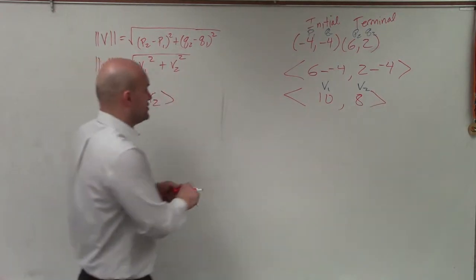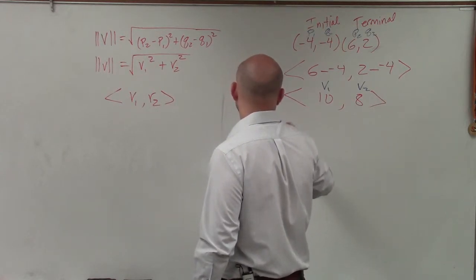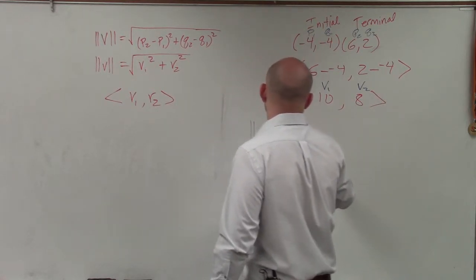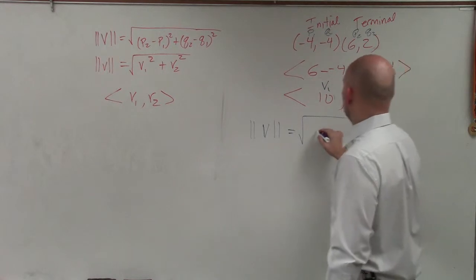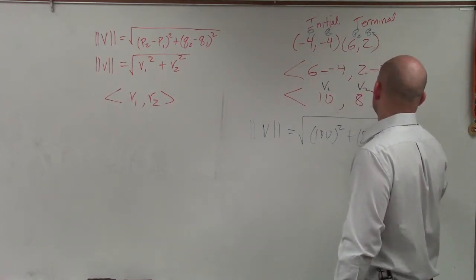So now, all we basically need to do to determine the magnitude of this vector is just take the square root of 10 squared plus 8 squared.